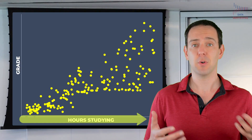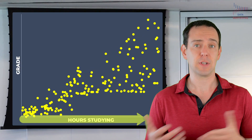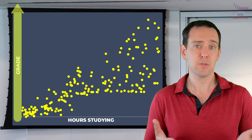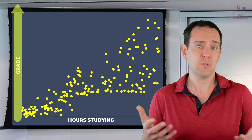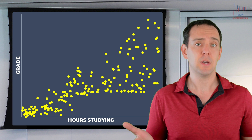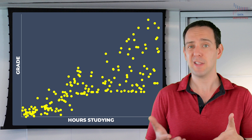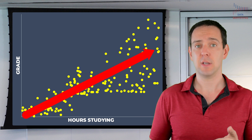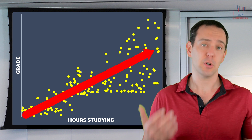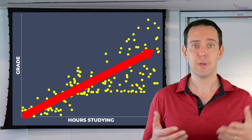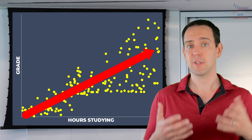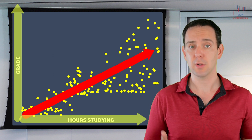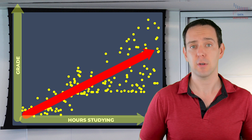For example, the more that people study for an exam, the better those people actually do on the exam. We tend to depict that relationship in a graph like this. It's not a perfect relationship, but in general, studying does correlate with exam outcomes.